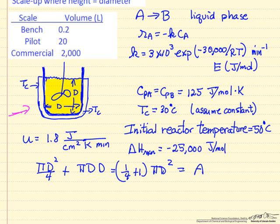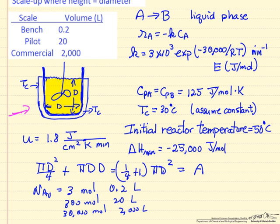The volume of course we're given, so we can calculate the areas for each of these cases, and then we can calculate as our scale-up how many moles we're going to put in the reactor. We're going to use 3 moles for the 0.2 liter tank, therefore 300 moles for the 20 liter, and then 30,000 moles for the 2,000 liter tank. So we have our initial conditions.